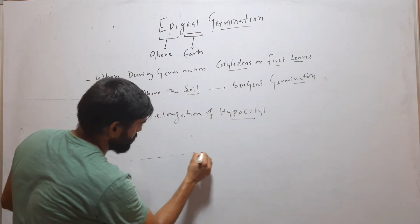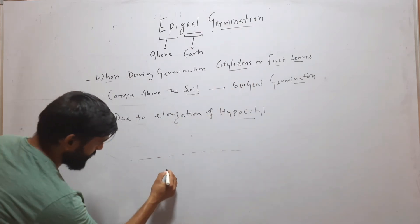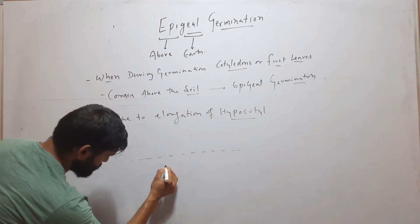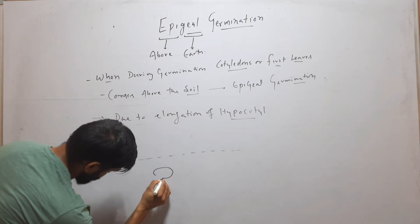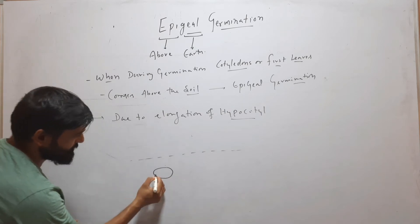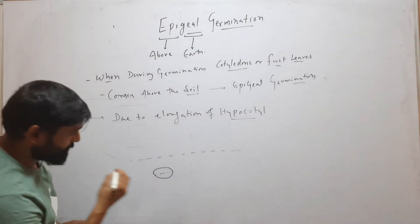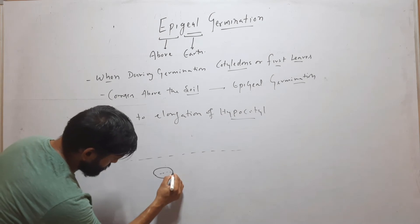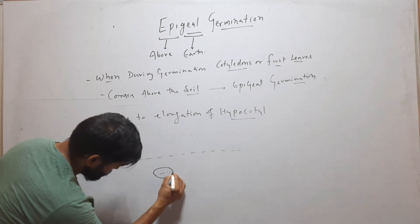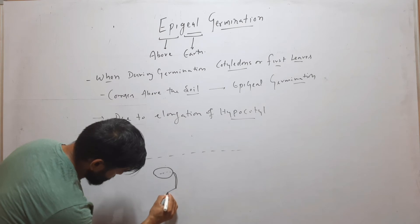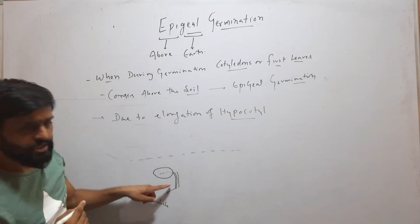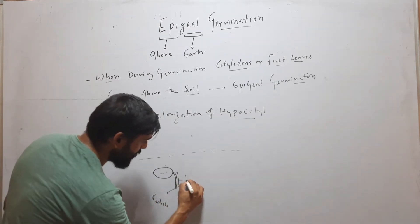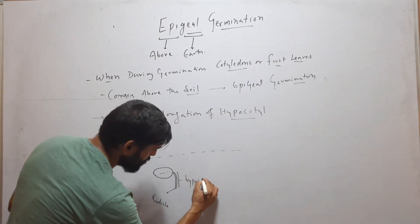Suppose we have soil and a seed. This lower part is radicle and this part between radicle and cotyledon is hypocotyl.